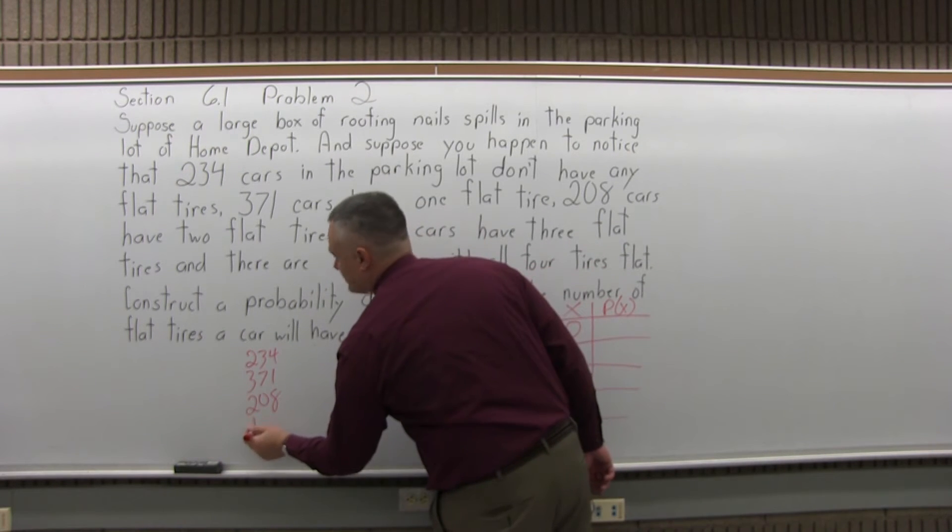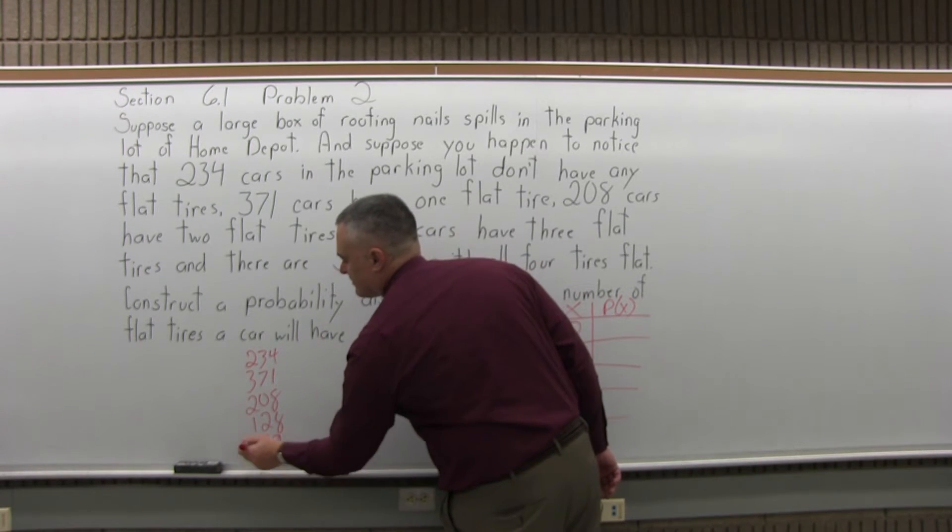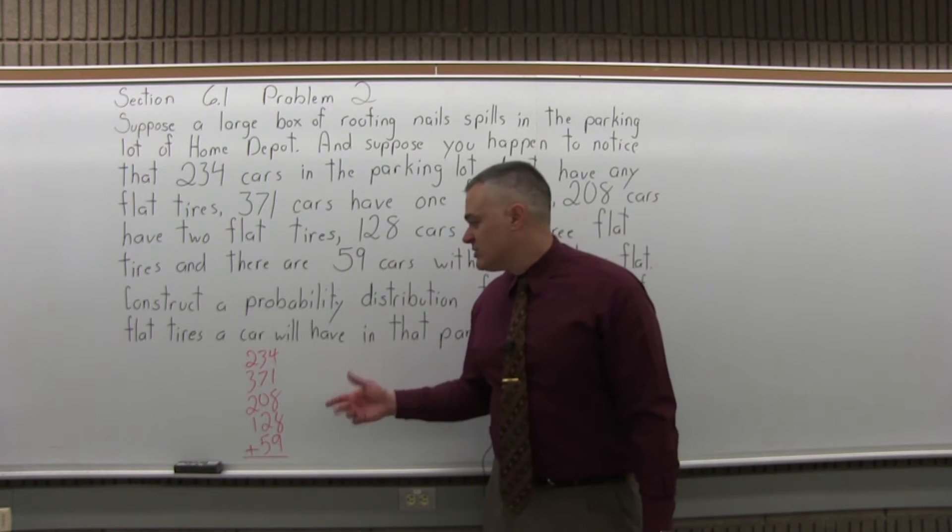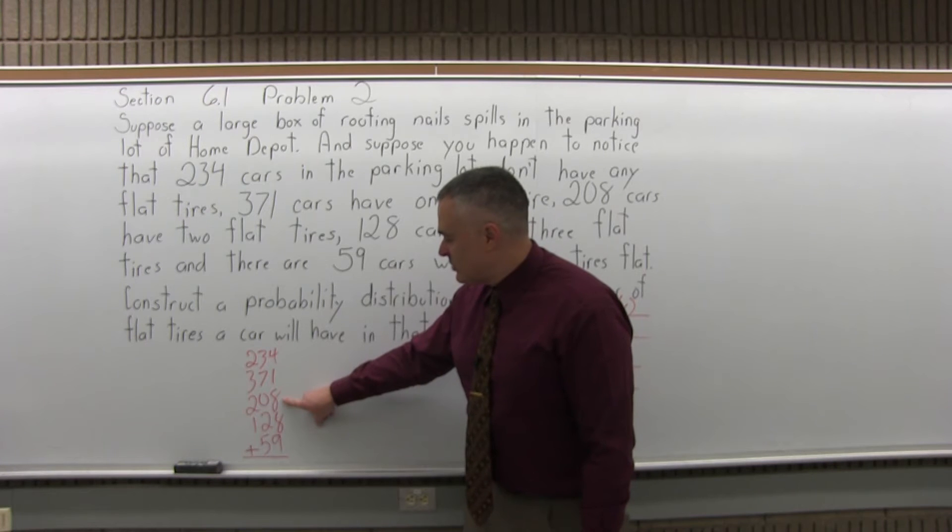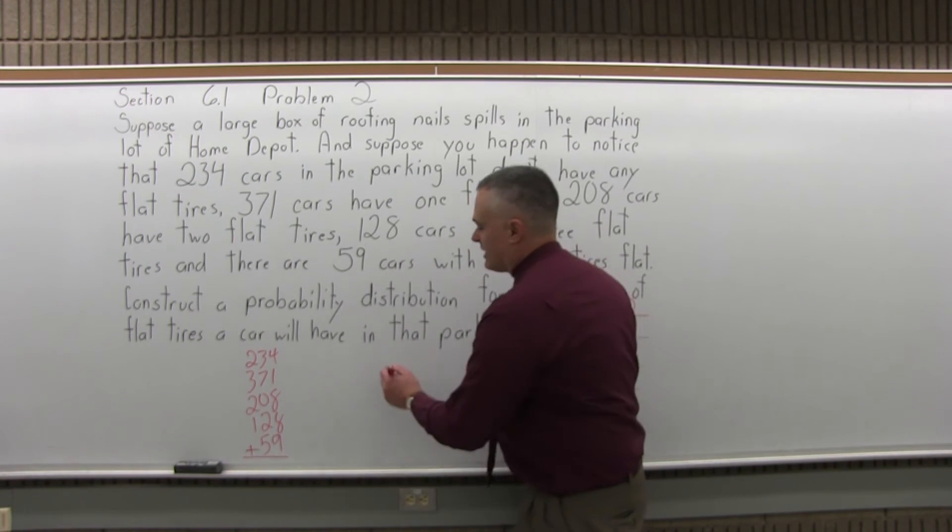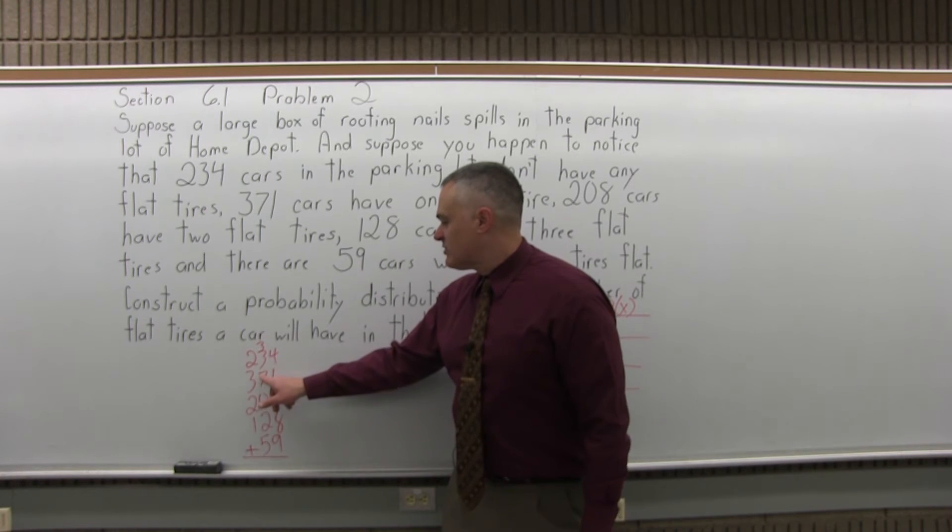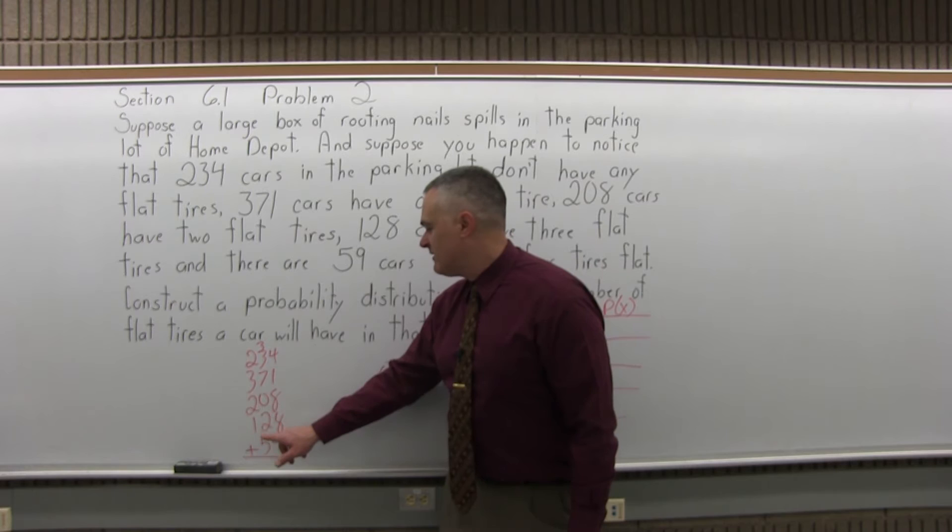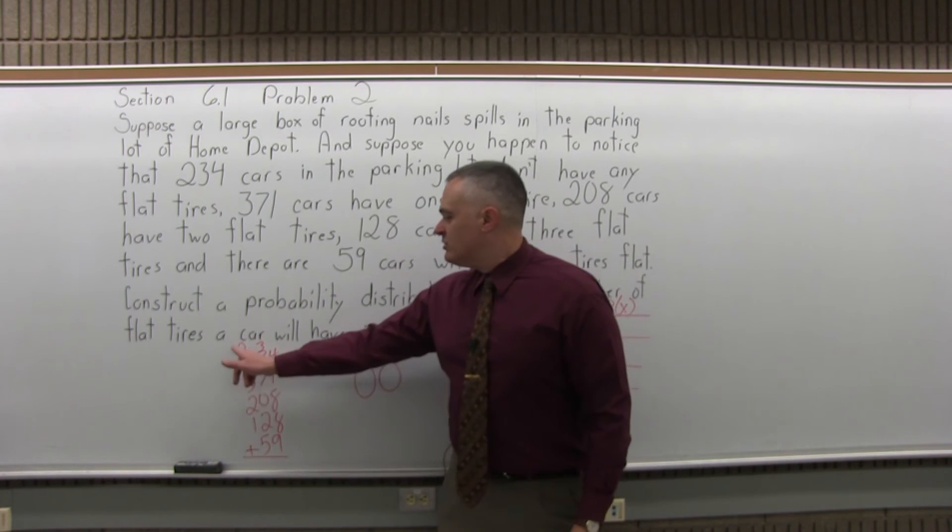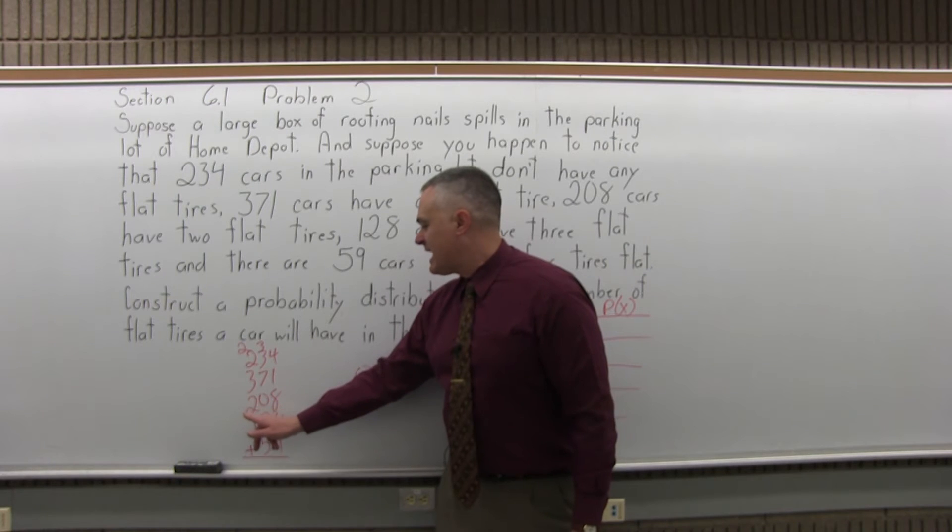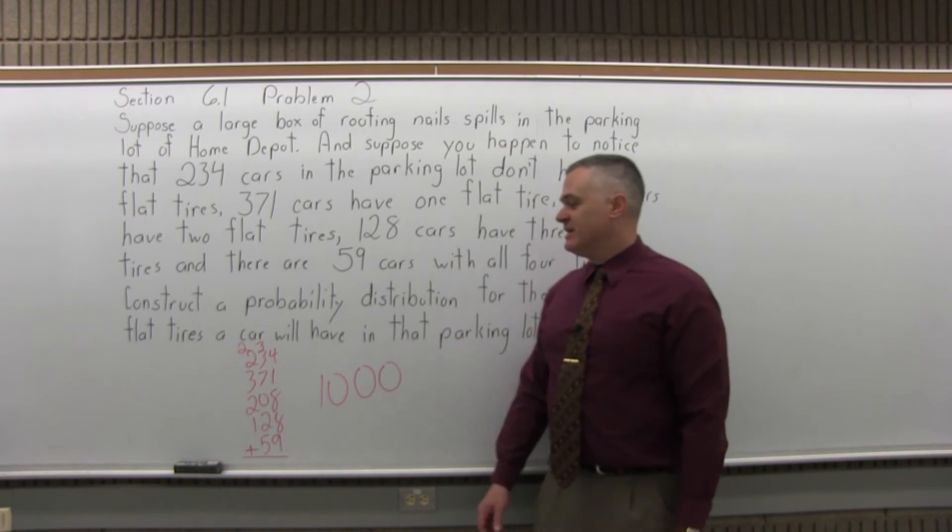128 had three flat tires, and then 59 had all four flat. Now if you add those numbers up, you can either do it by hand or use your calculator, you'll see that the total comes out to 1,000 very conveniently. So 4 and 1 is 5, 5 and 8 is 13, 13 and 8 is 21, 21 and 9 is 30, carry the 3, 3 and 3 is 6, 6 and 7 is 13, 13 and 0 is still 13, 13 and 2 is 15, 15 and 5 is 20, carry the 2, 2 plus 2 is 4, 4 and 3 is 7, 7 and 2 is 9, 9 and 1 is 10. 1,000 cars in the parking lot, which is going to make our math easy moving forward.